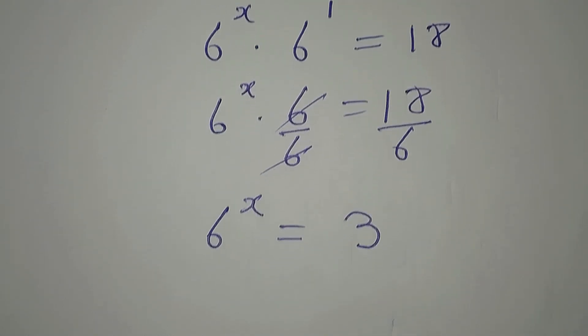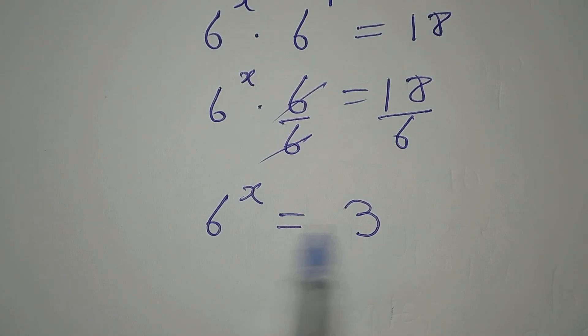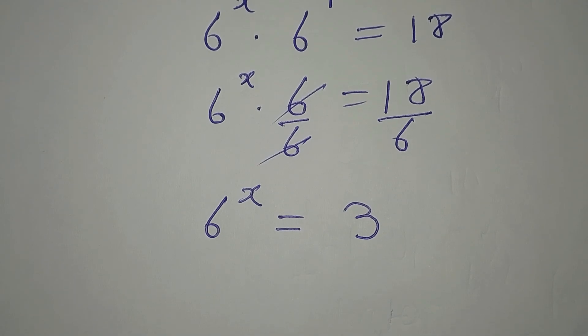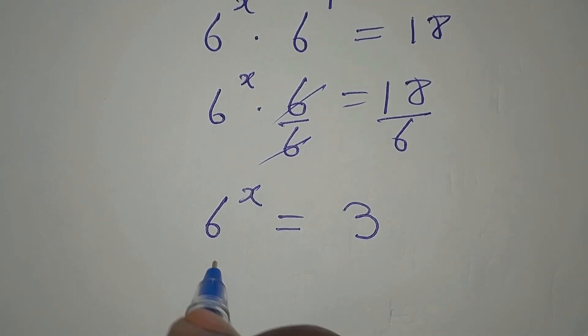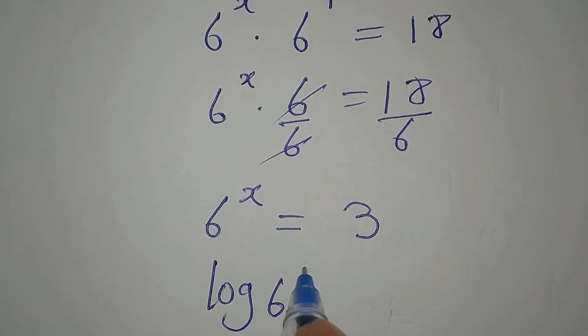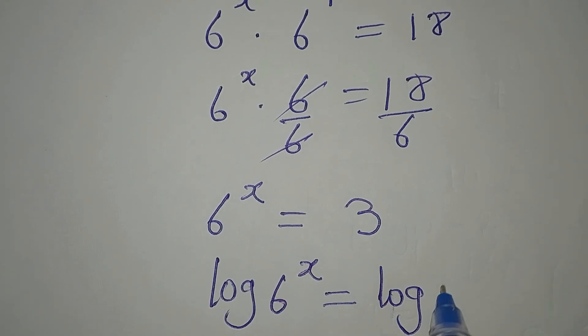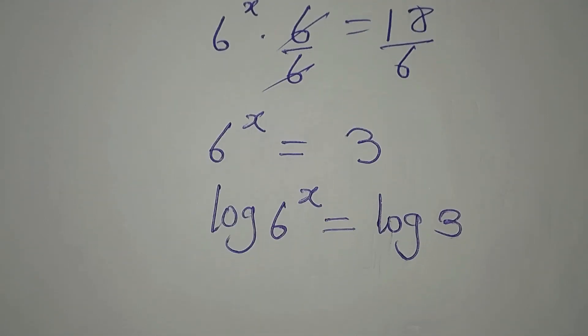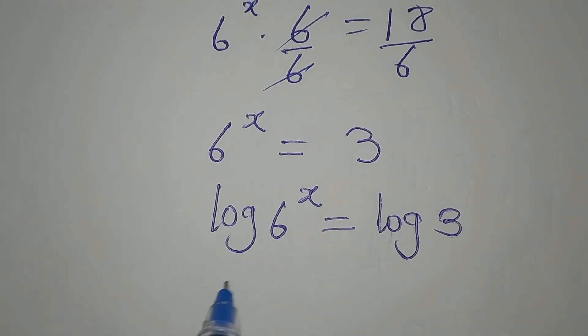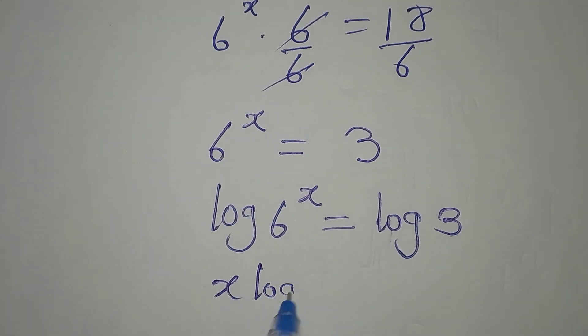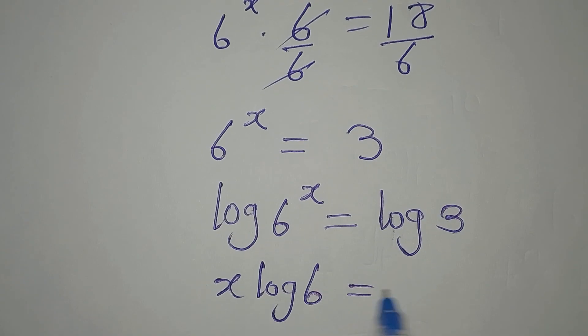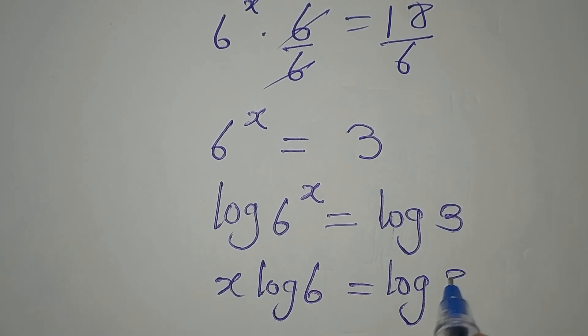And then we cannot write 3 in this form, so what we'll do is take the log of both sides. Now then we have log of 6 to the power of x equals log of 3. The power here will go behind, so we have x log 6 to be equal to log of 3.